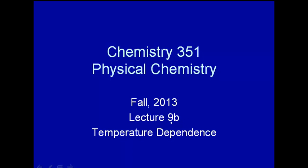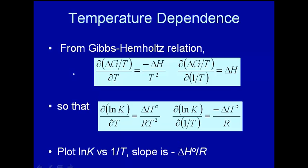Here we are at the last part of lecture 9 — this should be lecture 9c. We're looking at the temperature dependence of the Gibbs free energy. This is what we get; it's called the Gibbs-Helmholtz relation. You probably don't recognize it in its present form, but as we develop this equation, you'll see that this is what you learned in introductory chemistry: a plot of log K versus 1/T gives you the standard enthalpy of formation.